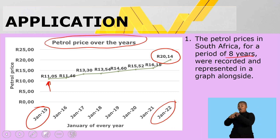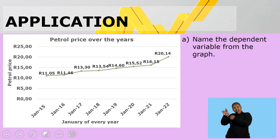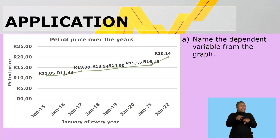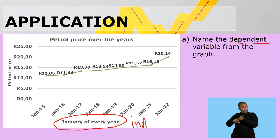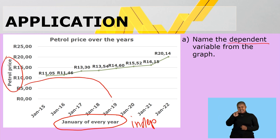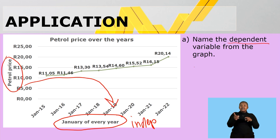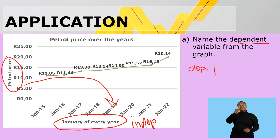Let's look at the questions they ask. Name the dependent variable from the graph. Remember, the dependent variable is something that depends on another variable. January of every year is independent because it's going to happen either way, but the petrol price depends on the time of year. So the dependent variable is the petrol price.